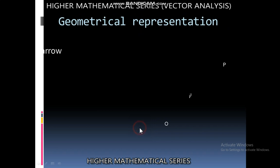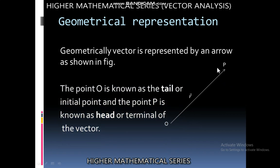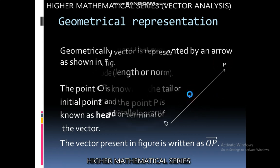Geometrically we represent the vector by an arrowhead. Where the vector starts is the tail or initial point and where the vector ends is the head or terminal point. O is the tail and P is the head of the vector. This is the OP vector named as R vector.